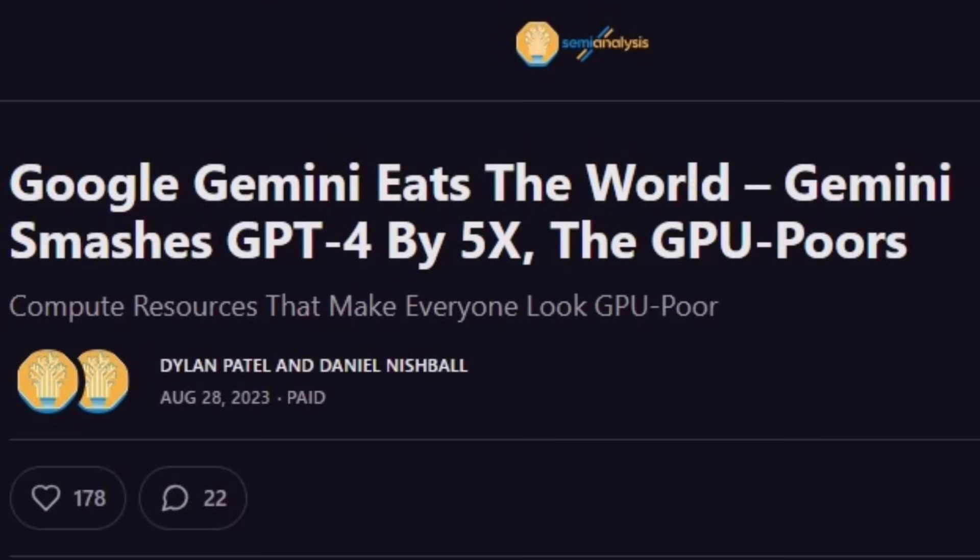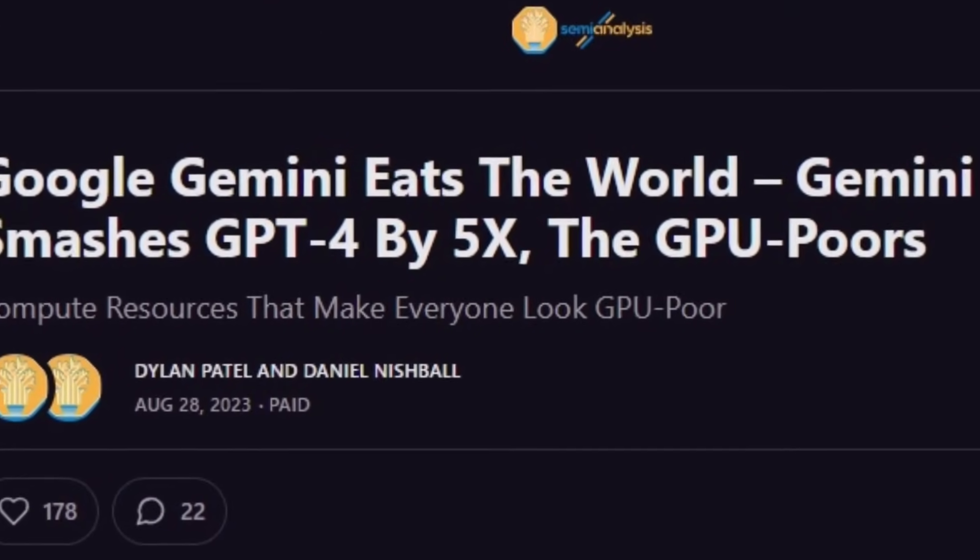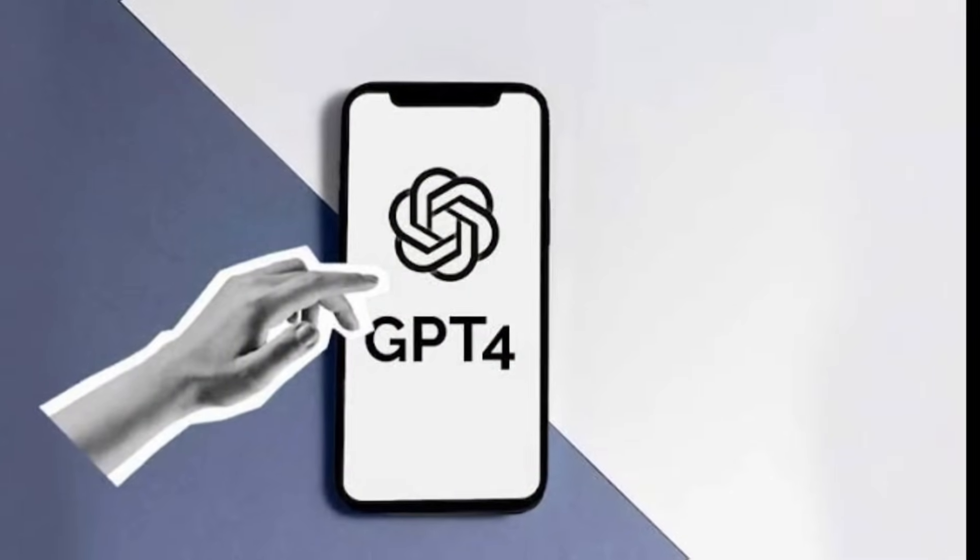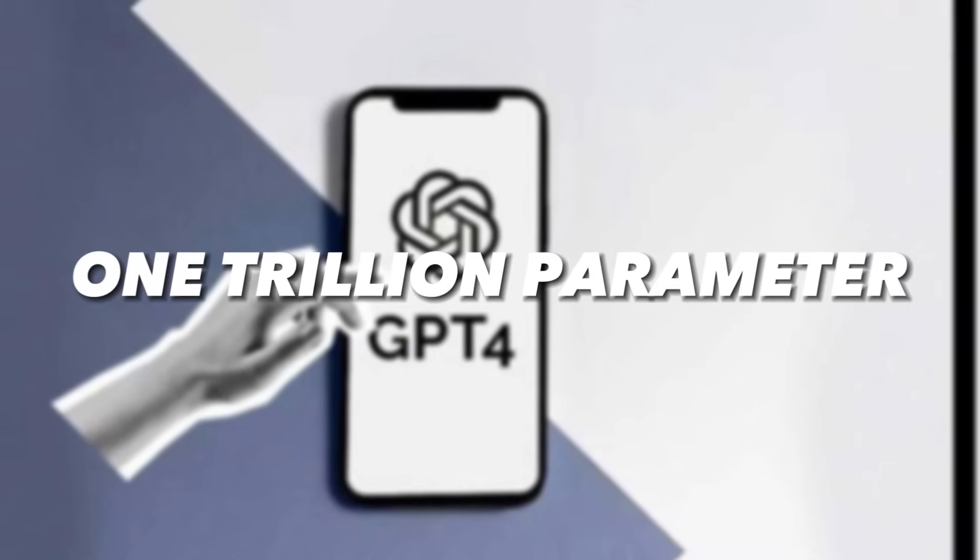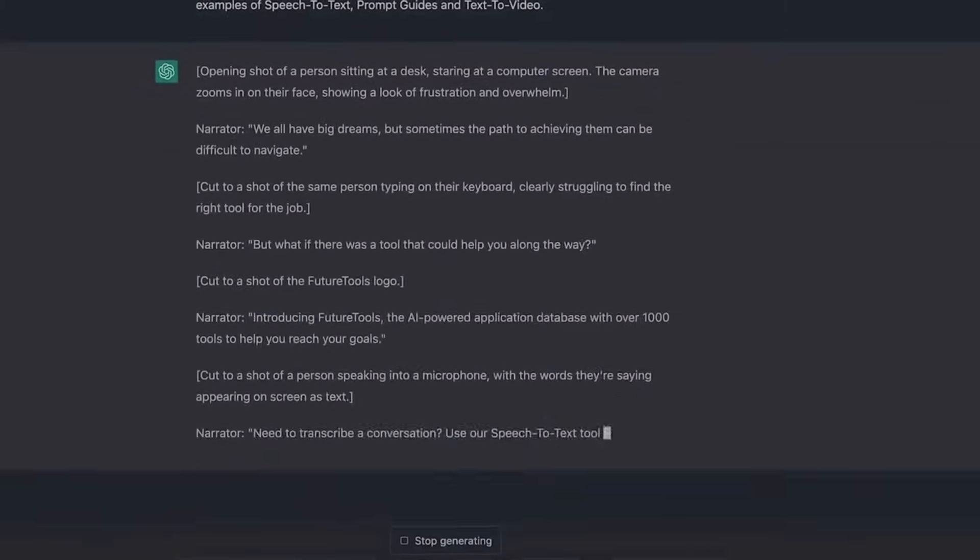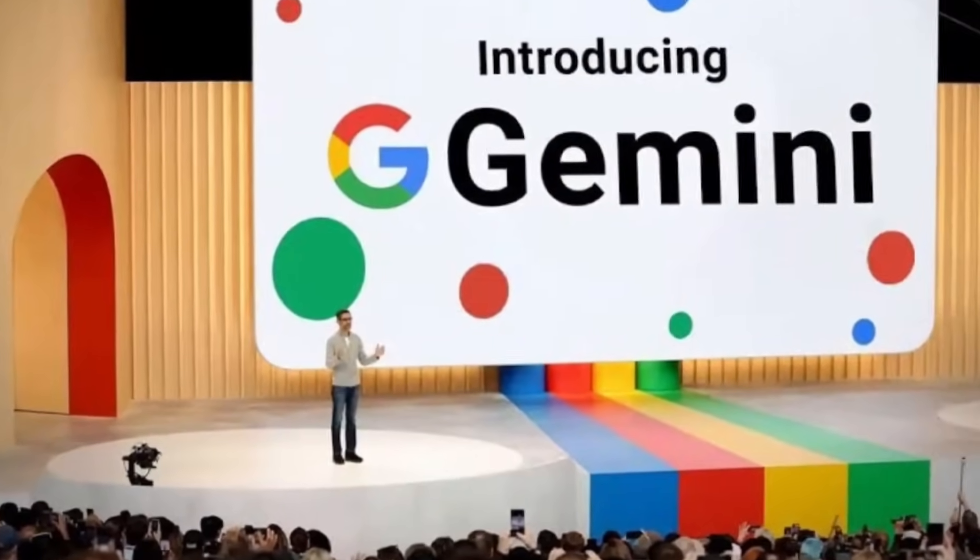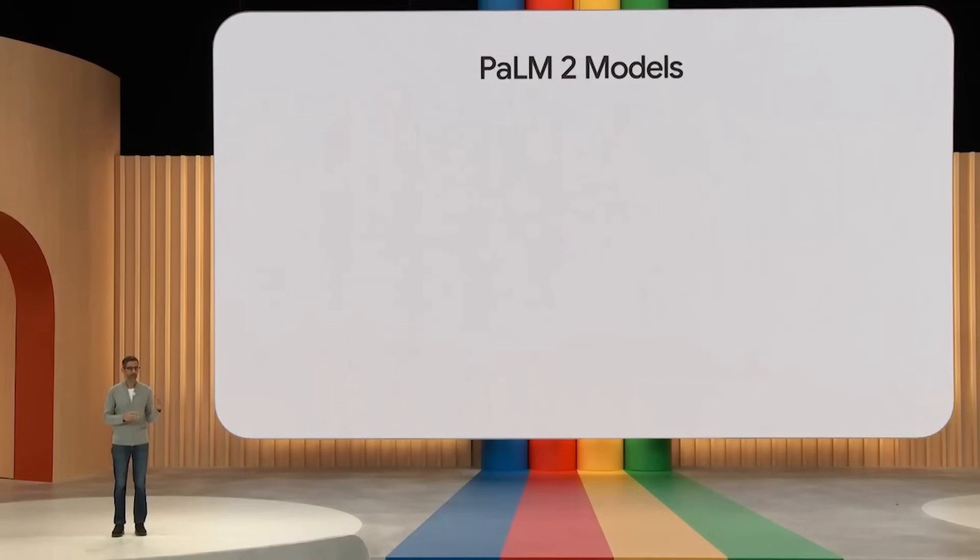In terms of size and complexity, both have their range of options. GPT-4 boasts a staggering one trillion parameters, making it a behemoth in text-based tasks. Gemini, while not explicitly revealing its size, offers a range from Gecko for smaller tasks to Unicorn for complex large-scale operations.